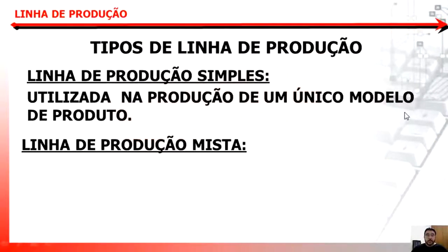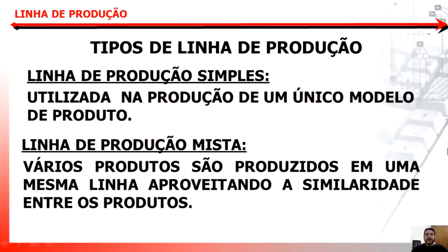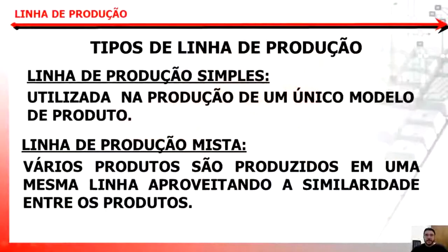Nós temos a linha de produção mista. Na linha de produção mista, vários produtos são produzidos em uma mesma linha, aproveitando a similaridade entre os produtos. Você pode estar montando o celular A em um determinado dia e no outro dia montar o celular B na mesma linha de produção — produtos diferentes, porém muito similares. Essa é a linha de produção mista: vários produtos produzidos numa mesma linha, aproveitando a similaridade que existe entre eles.